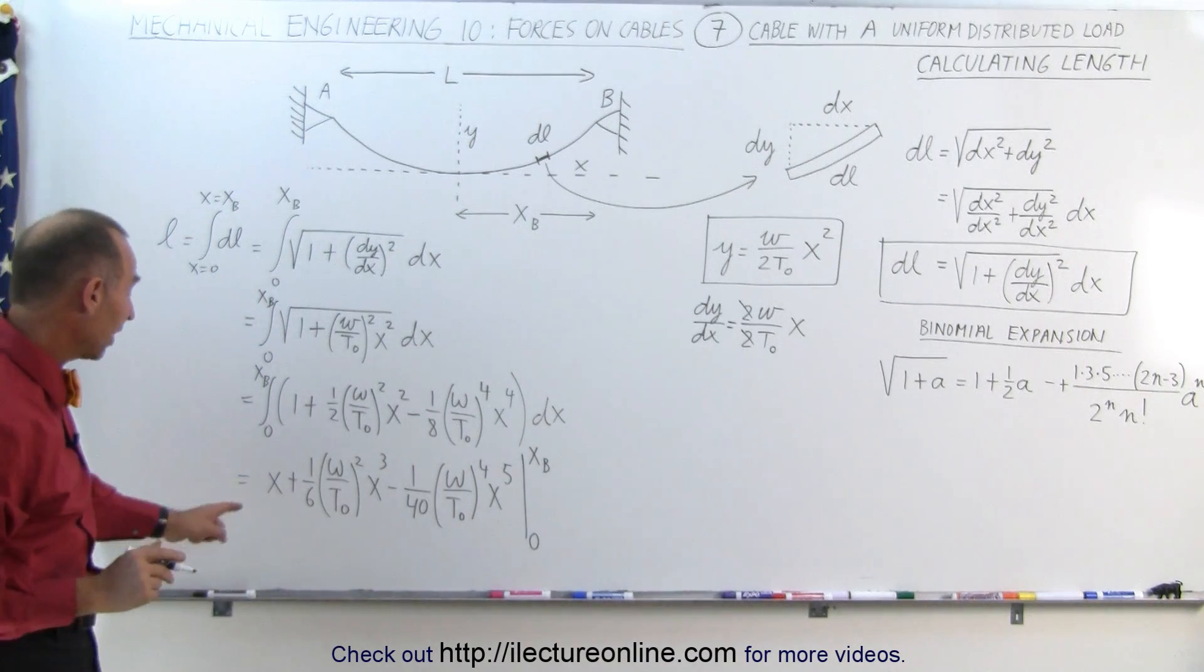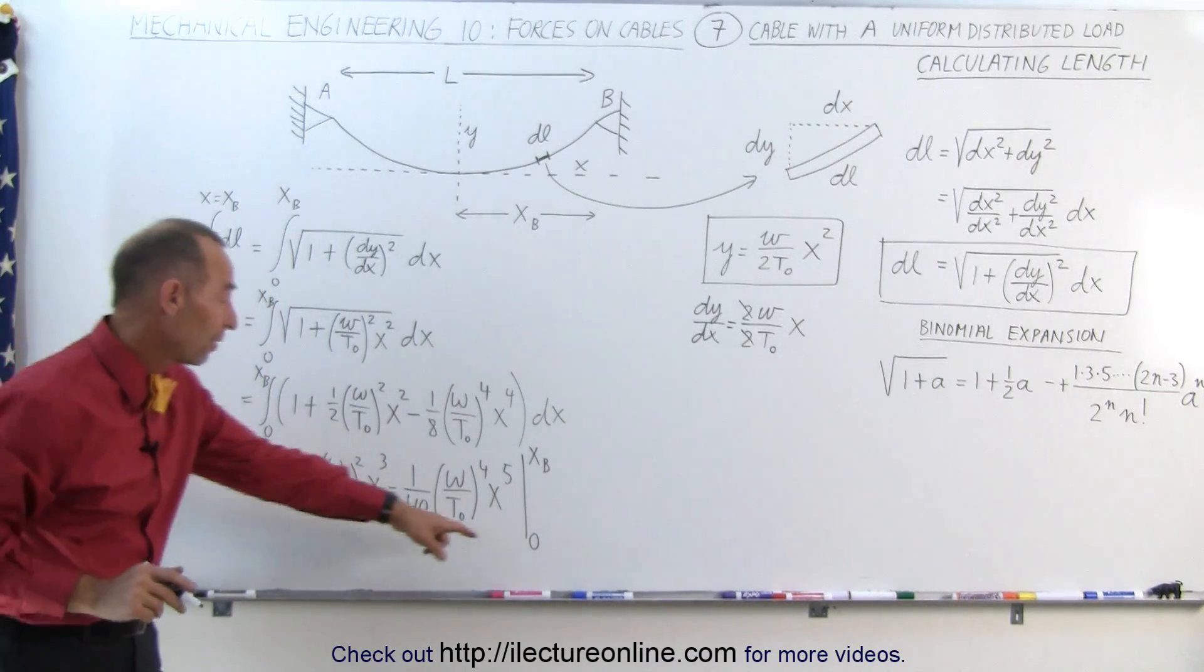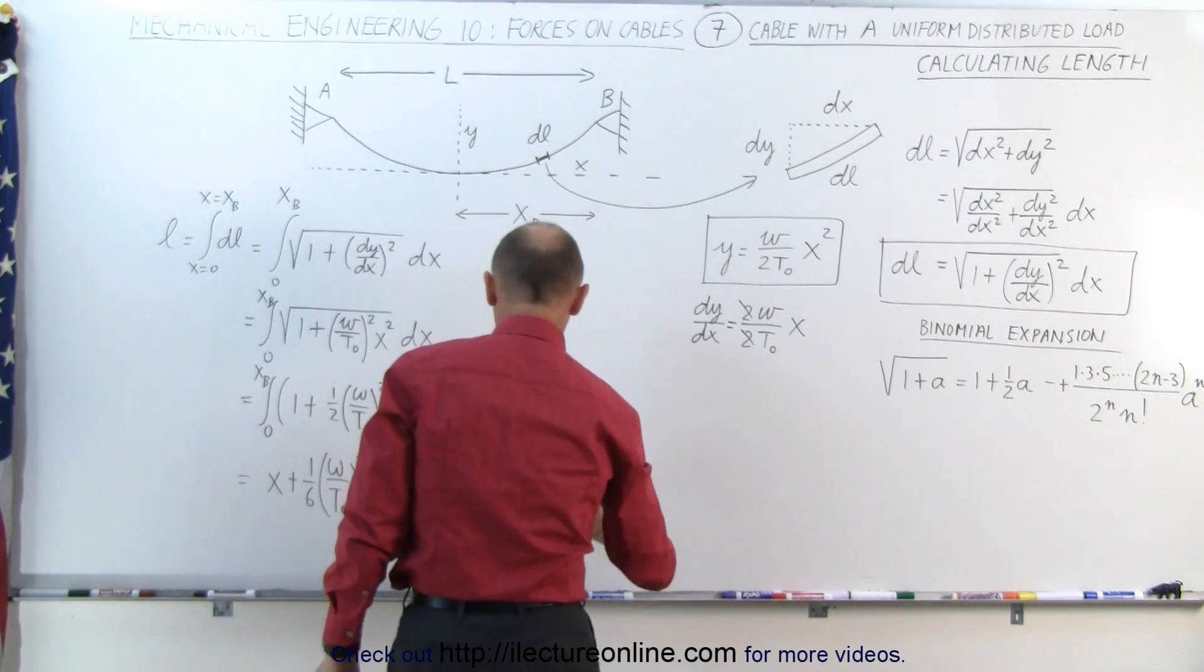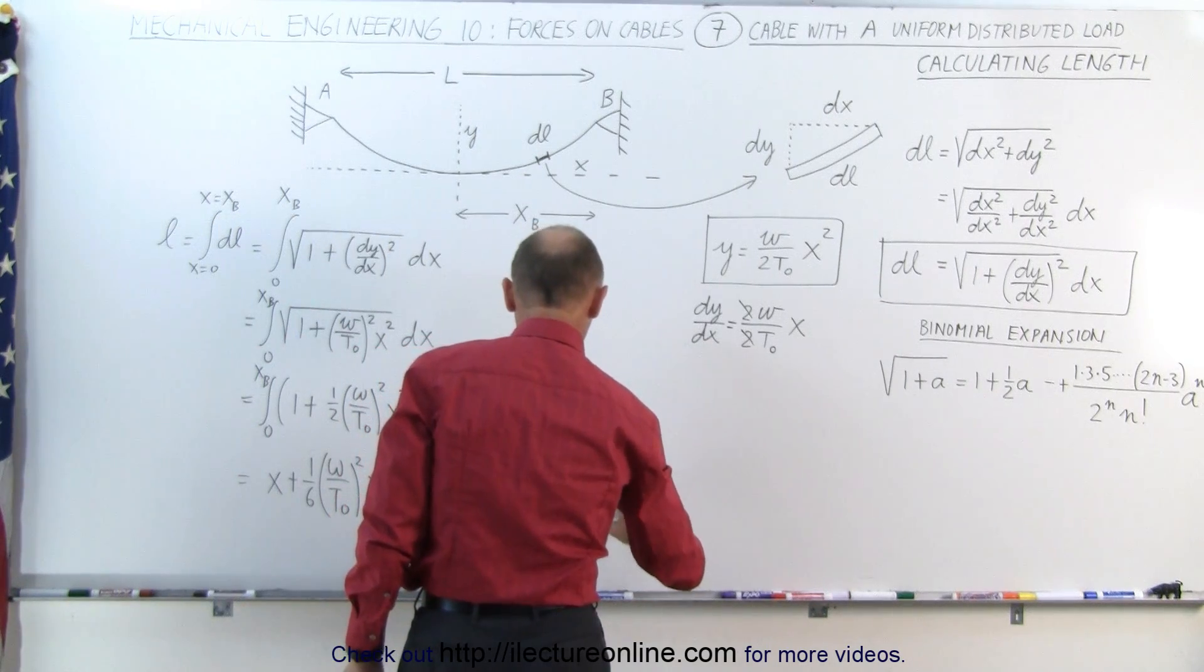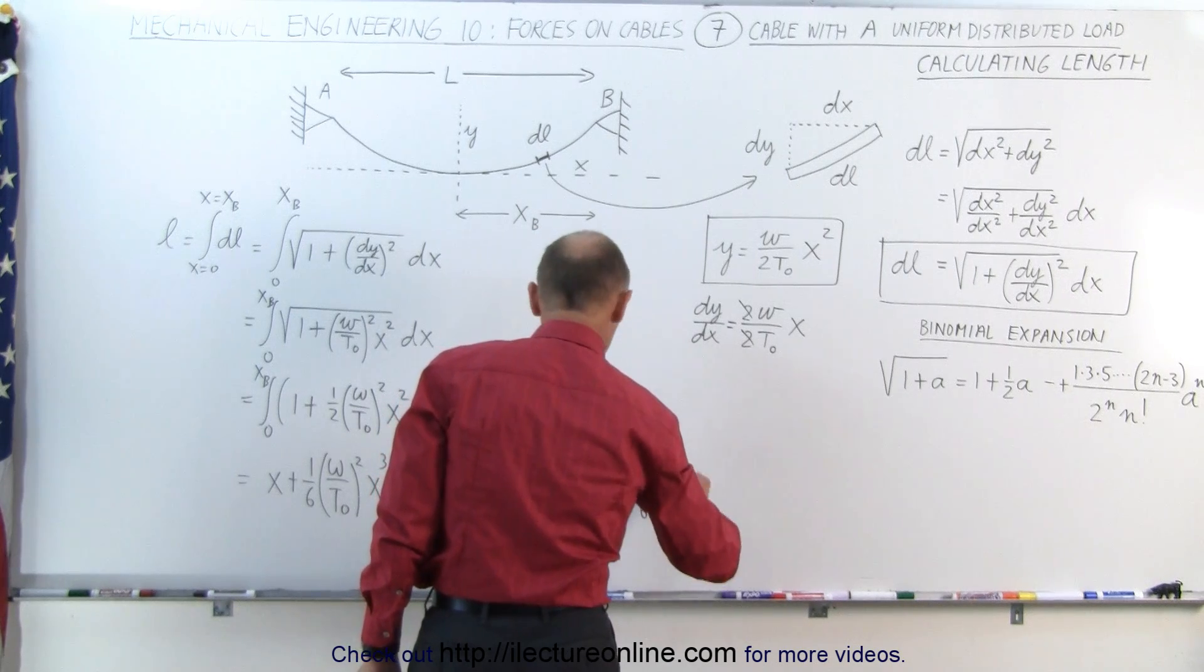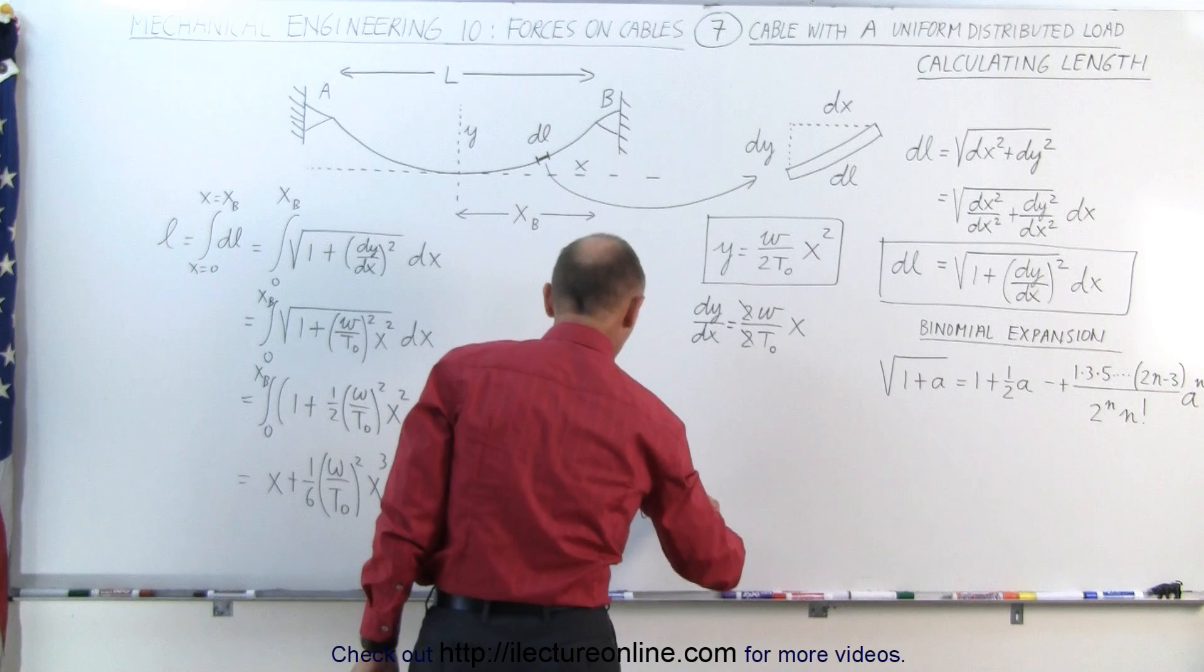And all we have to do then is replace every X by X sub B. And of course, when we plug in the lower limit, we get 0.